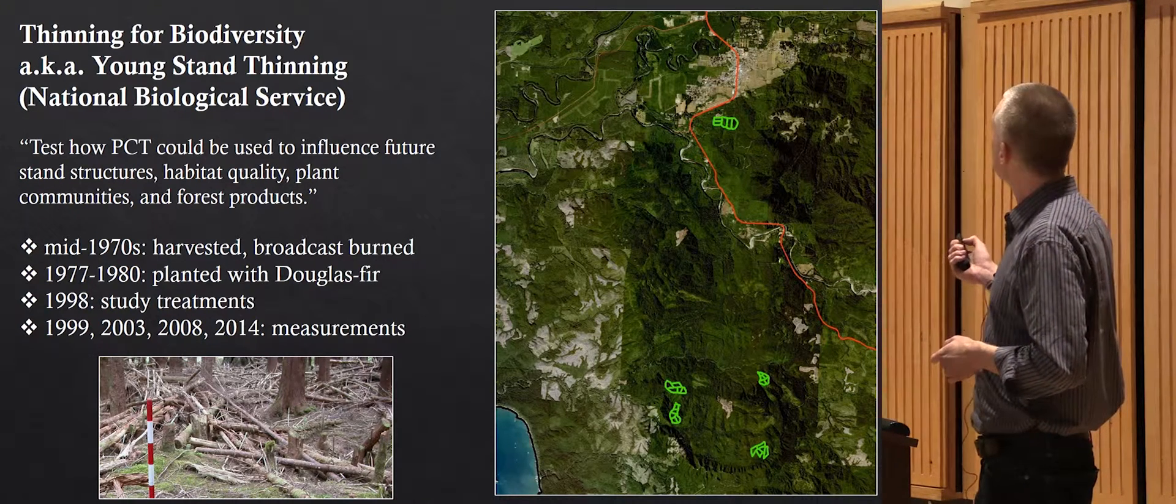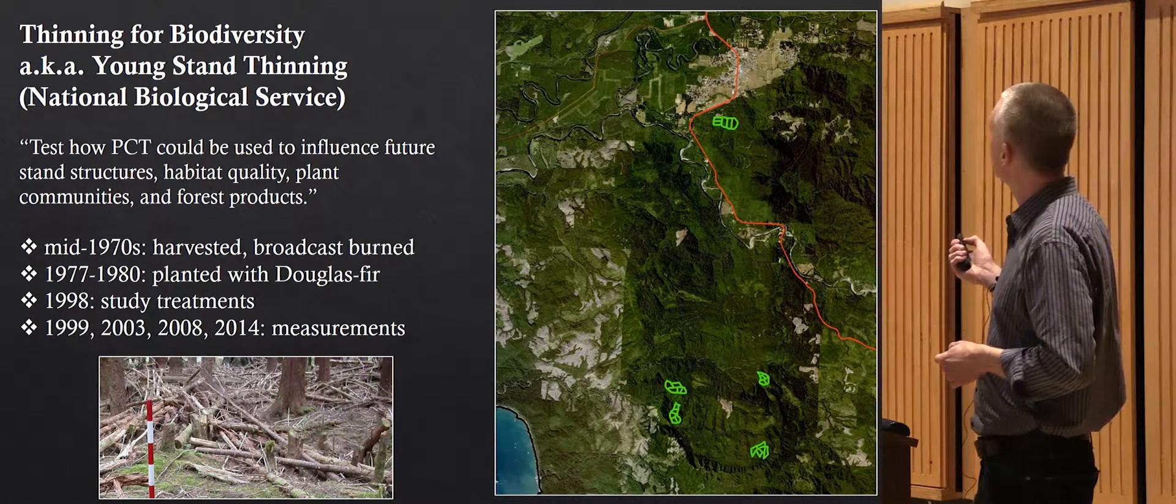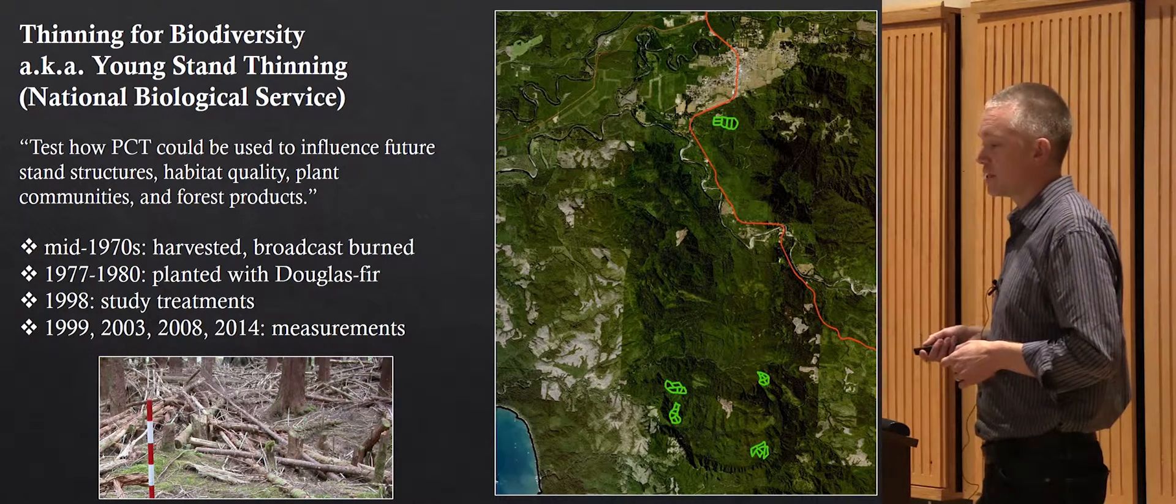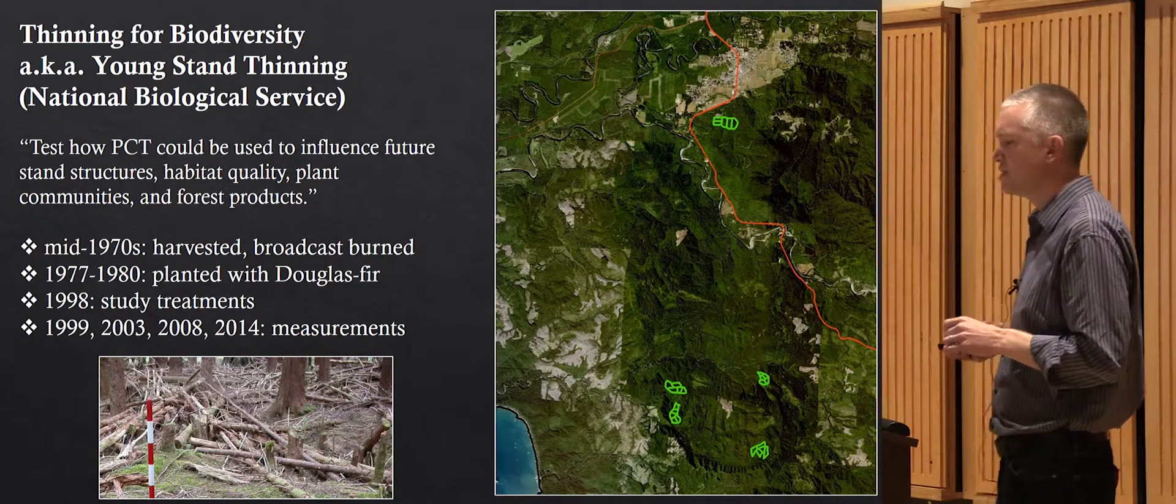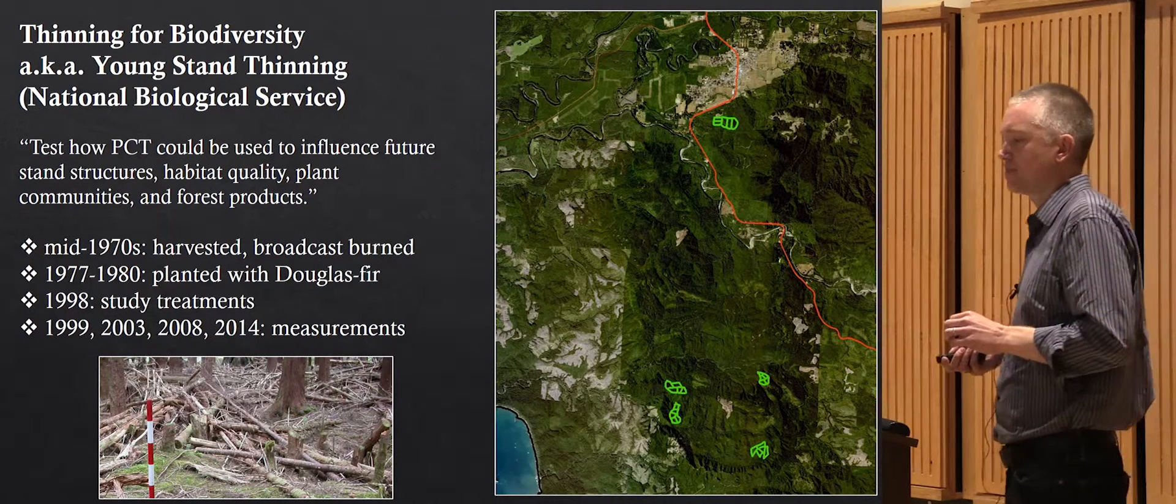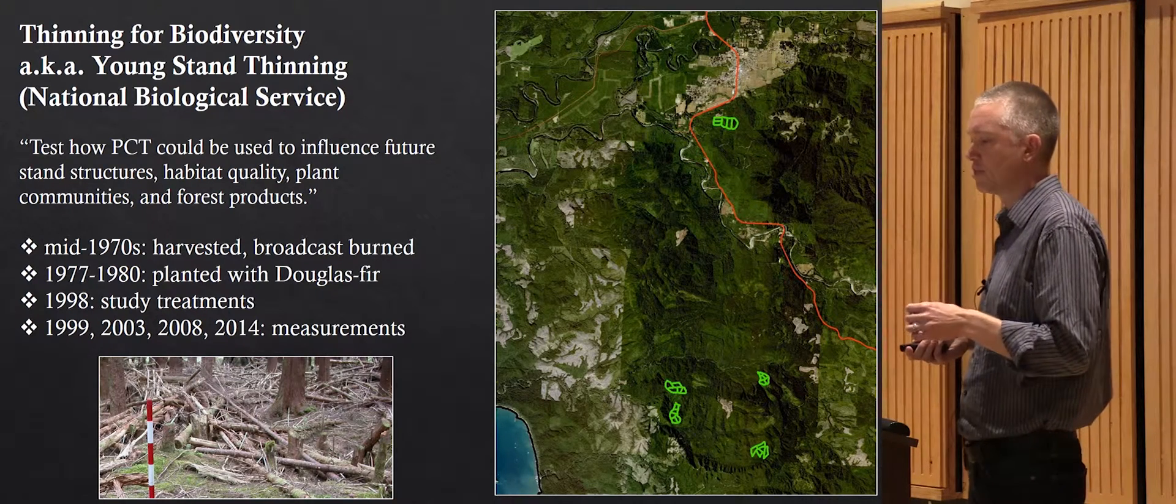This project was established on five different sites south of Forks. A quick timeline: these stands were all harvested in the mid-70s, planted by 1980, primarily with Douglas fir and a few Sitka spruce.